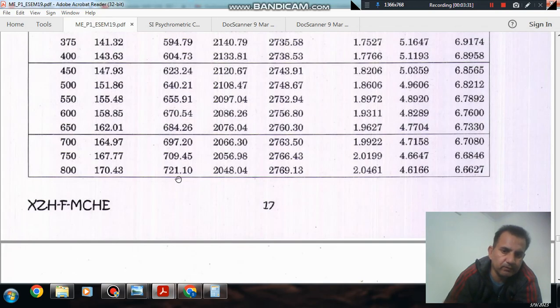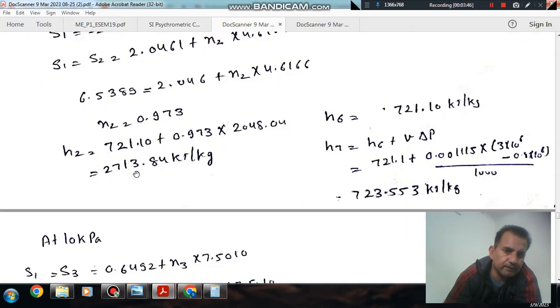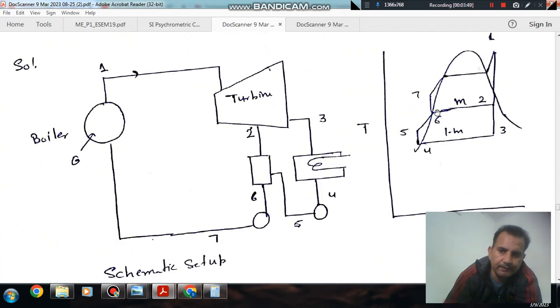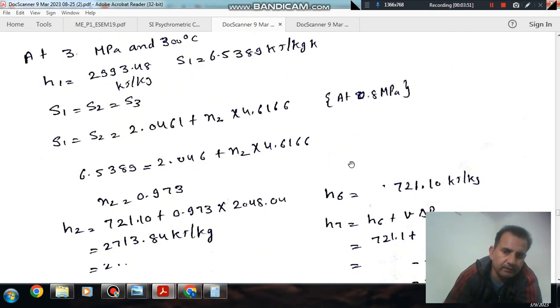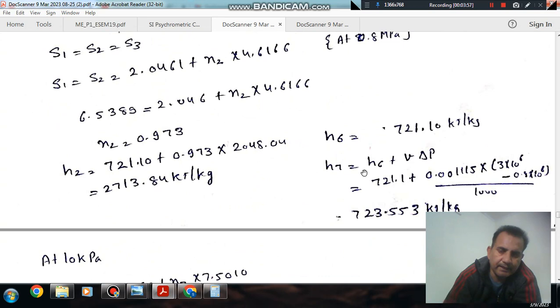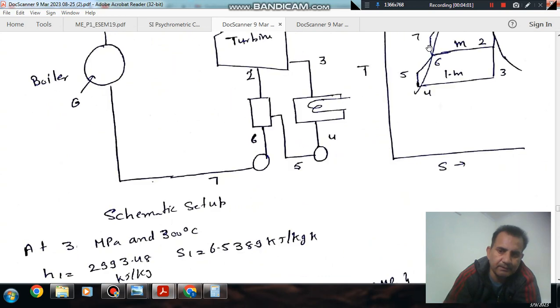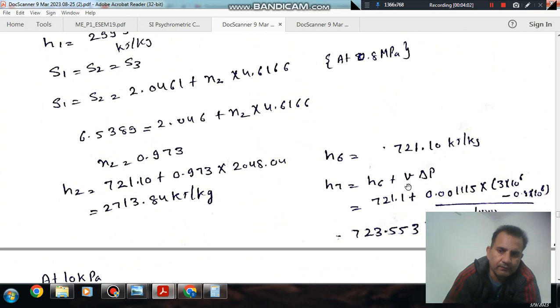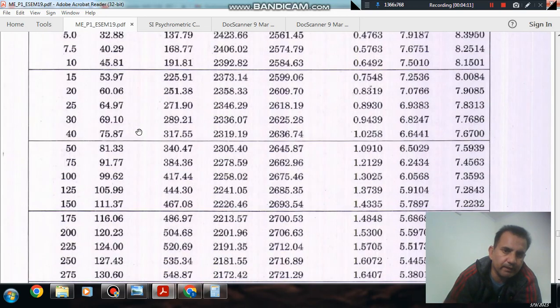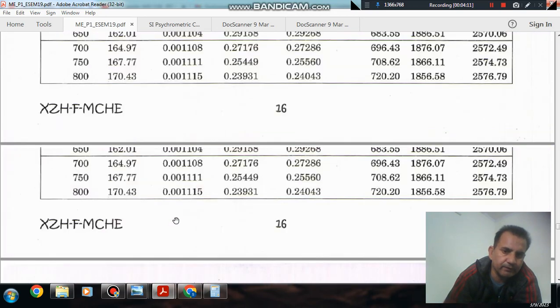The enthalpy we can find using the quality and the liquid and evaporation enthalpy values. So H2 = 721.1 + x2 × 2048.04, which gives H2 = 2070 kJ/kg. H6 is the liquid enthalpy at this pressure, which is 721.51 kJ/kg. And H7 is H6 plus pump work.